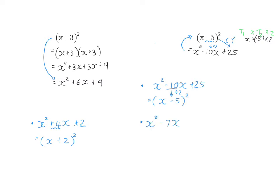Let's look at our final one. To form a bracket squared, I'm going to start with the coefficient and half that, which will be minus seven over two, and now that minus seven over two I'm going to square, which will become positive 49 over four.